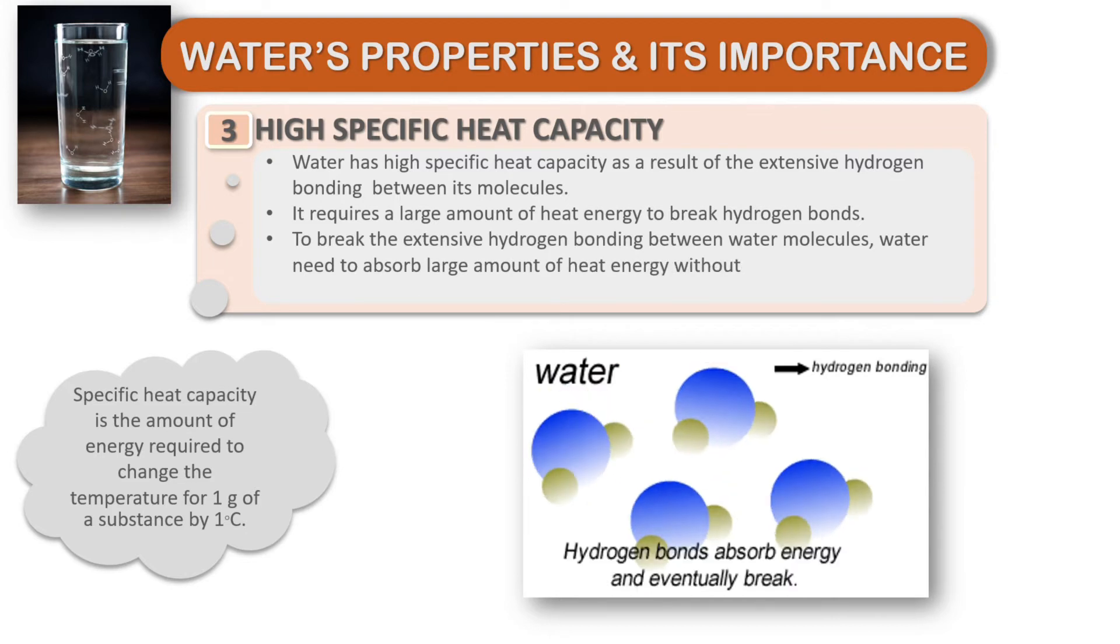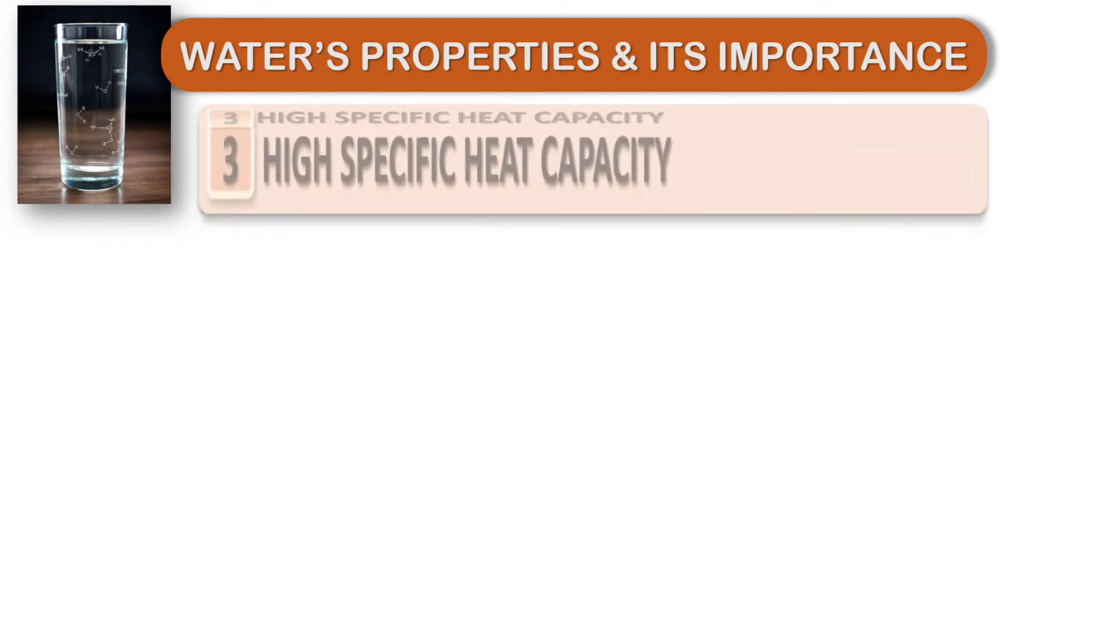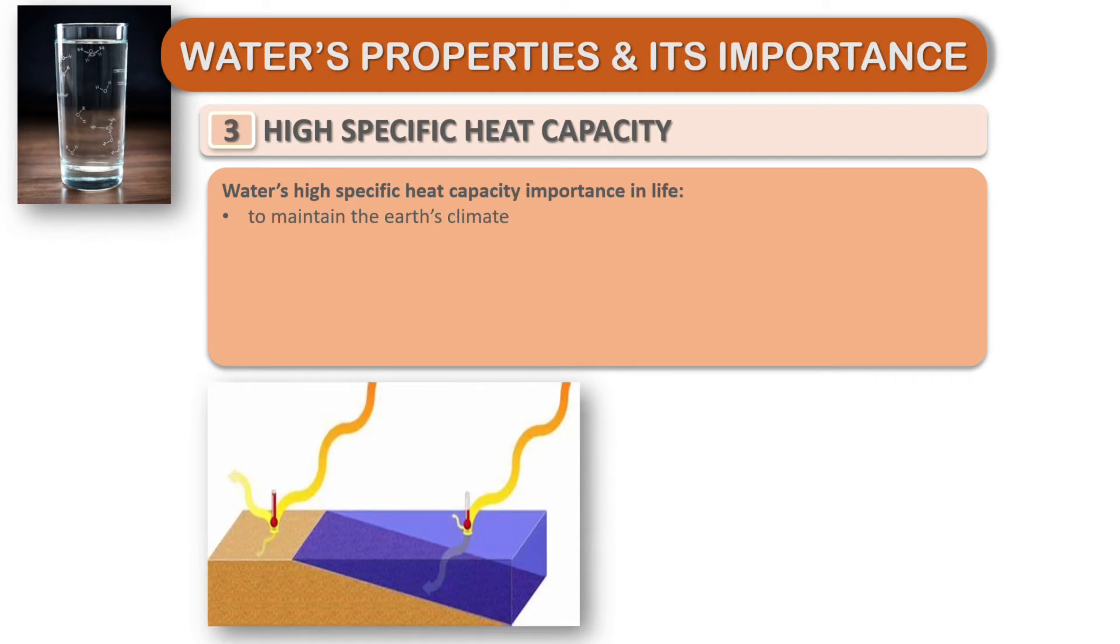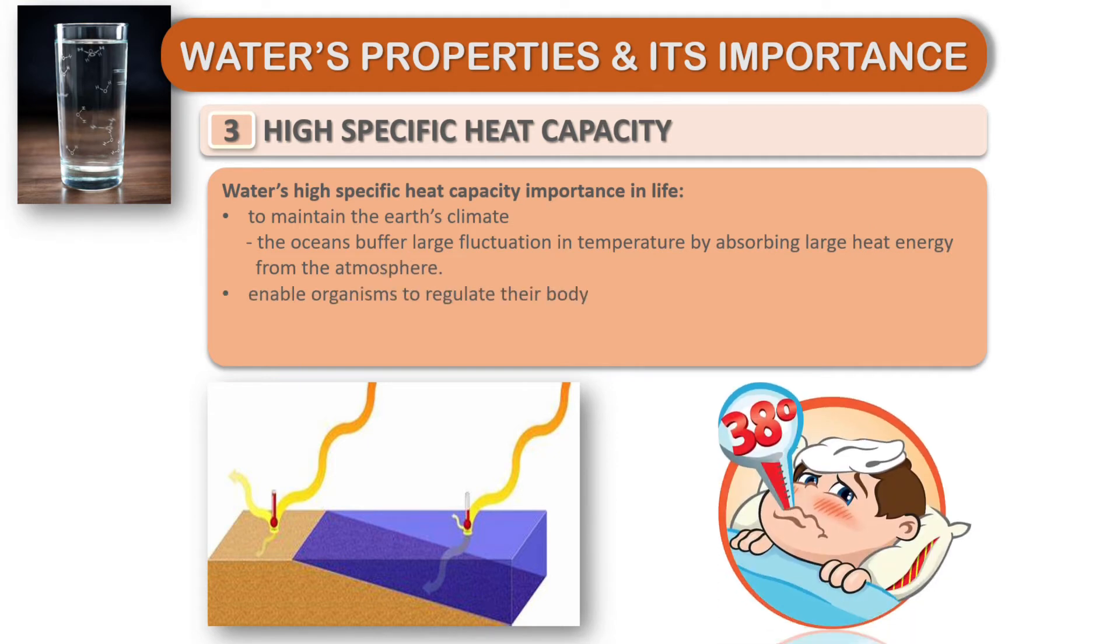To break the extensive hydrogen bonds between water molecules, water needs to absorb large amounts of heat energy without drastically rising its temperature. Water's high specific heat capacity is important in life to maintain the Earth's climate. The oceans buffer large fluctuations in temperature by absorbing large heat energy from the atmosphere.